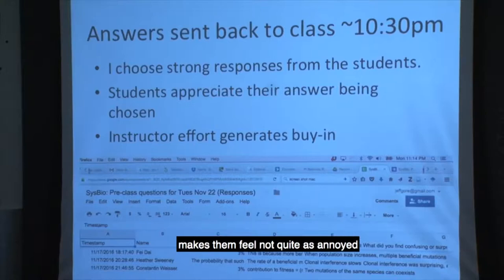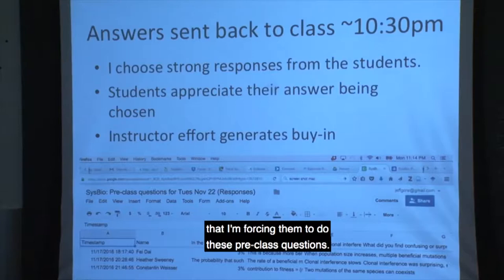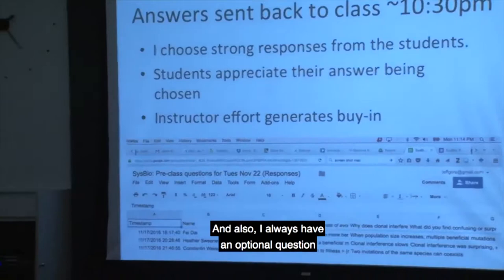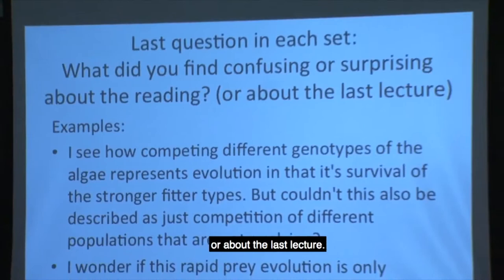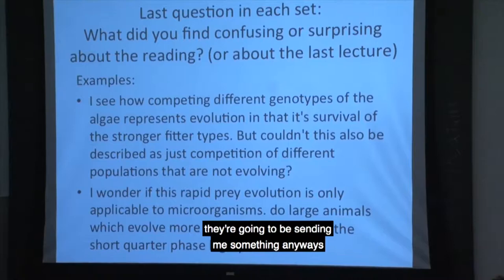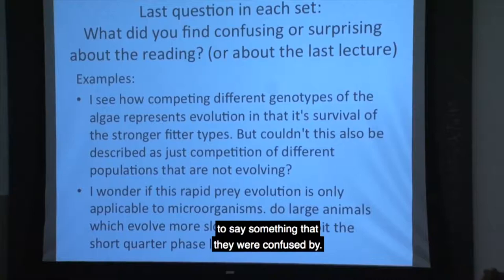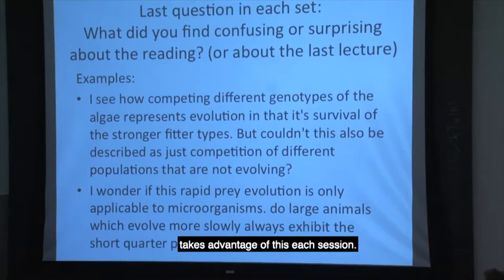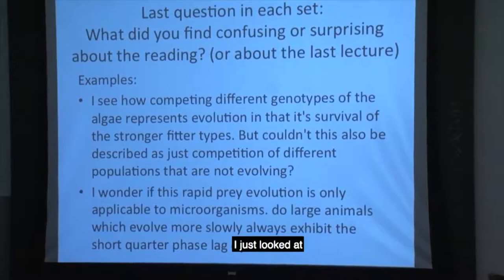I always have an optional question at the end, which is basically: what did you find confusing or surprising about the reading or about the last lecture? Students often have questions they're not going to ask in class, but since they're already submitting something via Google Forms, it's very easy for them to mention something confusing. Roughly one in five students takes advantage of this each session, and you can see the kinds of questions students had after the reading.